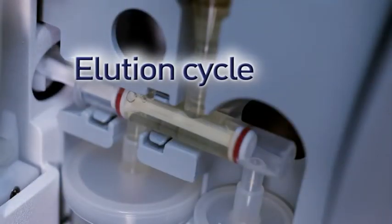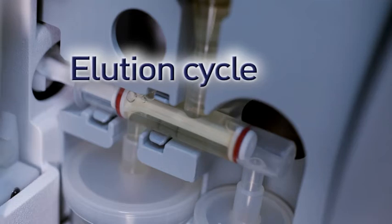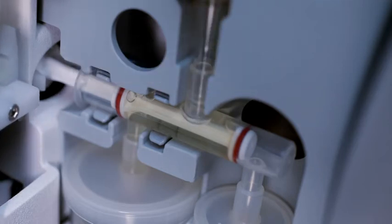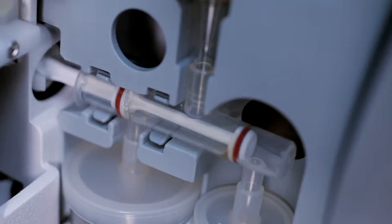During elution, PBS is flushed over the capture chamber, washing the beads. The bead suspension is expelled and drained, and the auto beads are drawn to the magnet.